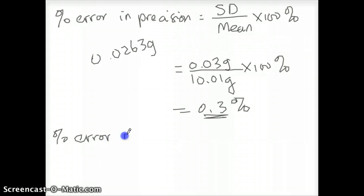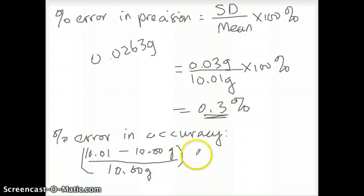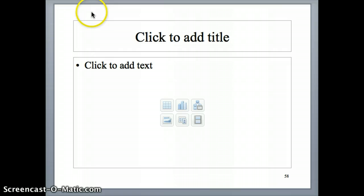The other calculation is percent error in accuracy. In this case, you're trying to assess how close your mean is to the true value. Why do we use the mean instead of each individual value? That's common practice because you're repeating your experiment a bunch of times, so you take the average as representative of all the different individual data points. Your mean is 10.01, subtract that from the true value which is 10.00 grams, divide that by the true value itself, which is 10.00 grams, and multiply by 100%. This should give you 0.1% as the percent error in accuracy.